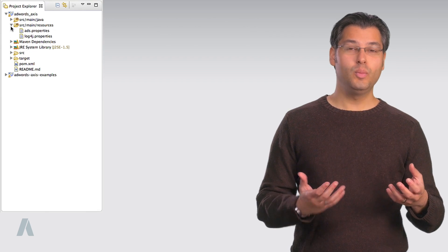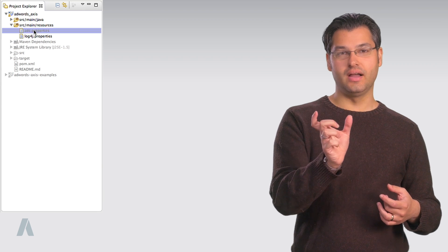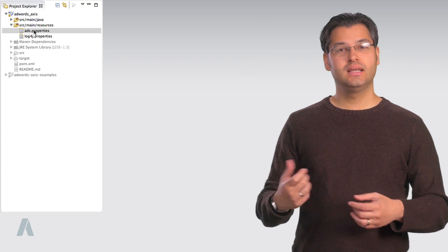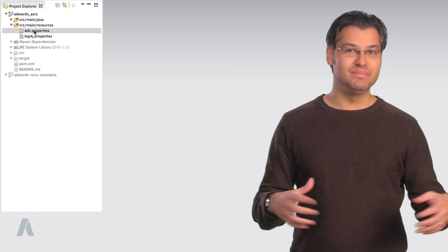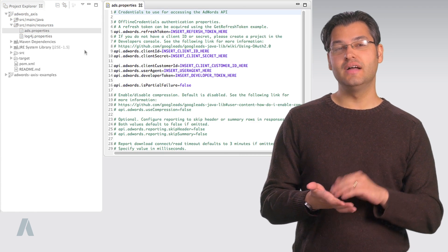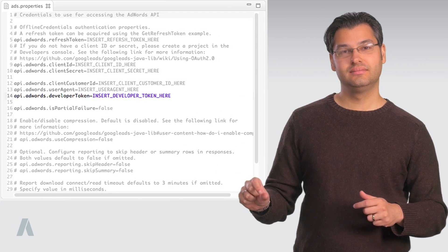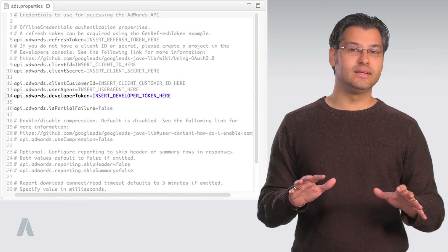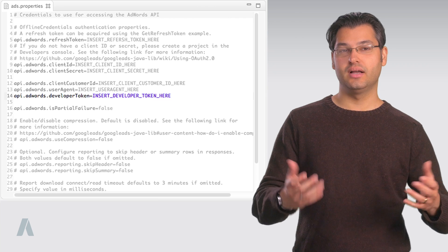In the client library and samples project, open the ads.properties file here. Now you'll need all of these values that we've been saving for later. First, enter your developer token on this line. It's okay if it's not approved yet, since we're using a test account customer ID.